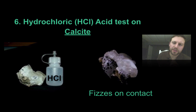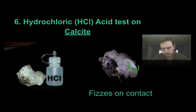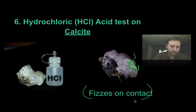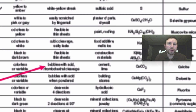We can also test many minerals to see if they react with hydrochloric acid. Calcite, for example — if we take a very weak dilution of hydrochloric acid and put it on the mineral, it will actually fizz or bubble. This helps us identify some minerals. On our reference table, a house symbol indicates that the mineral bubbles with acid.